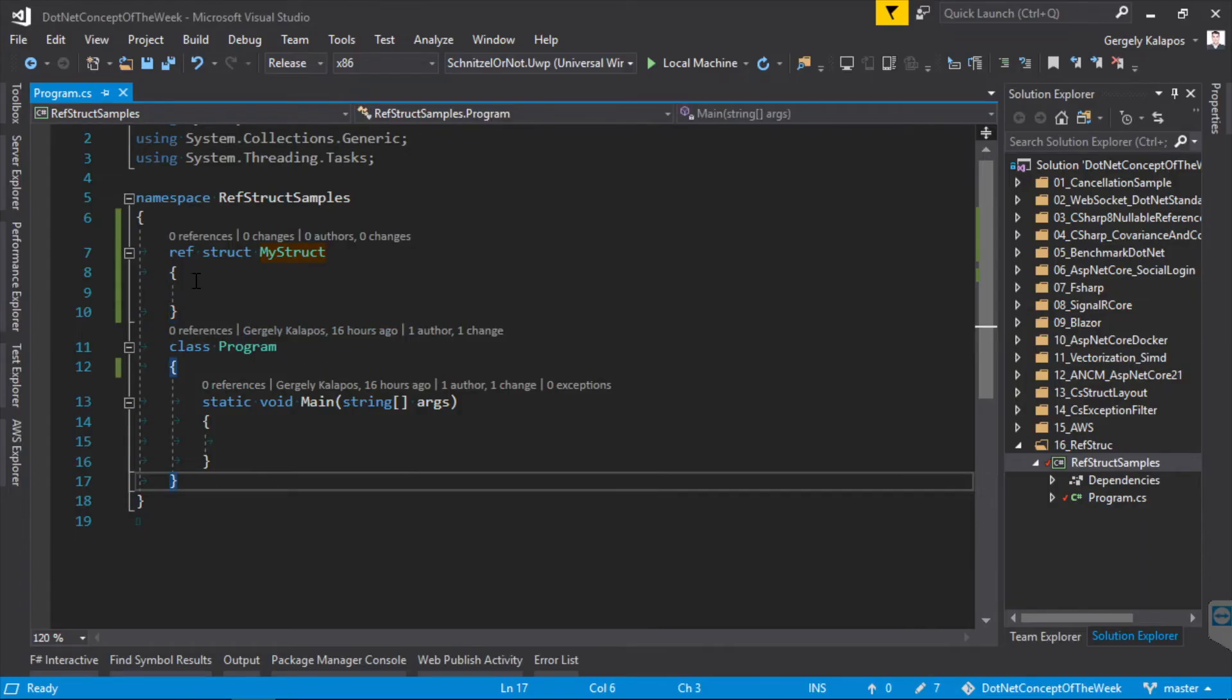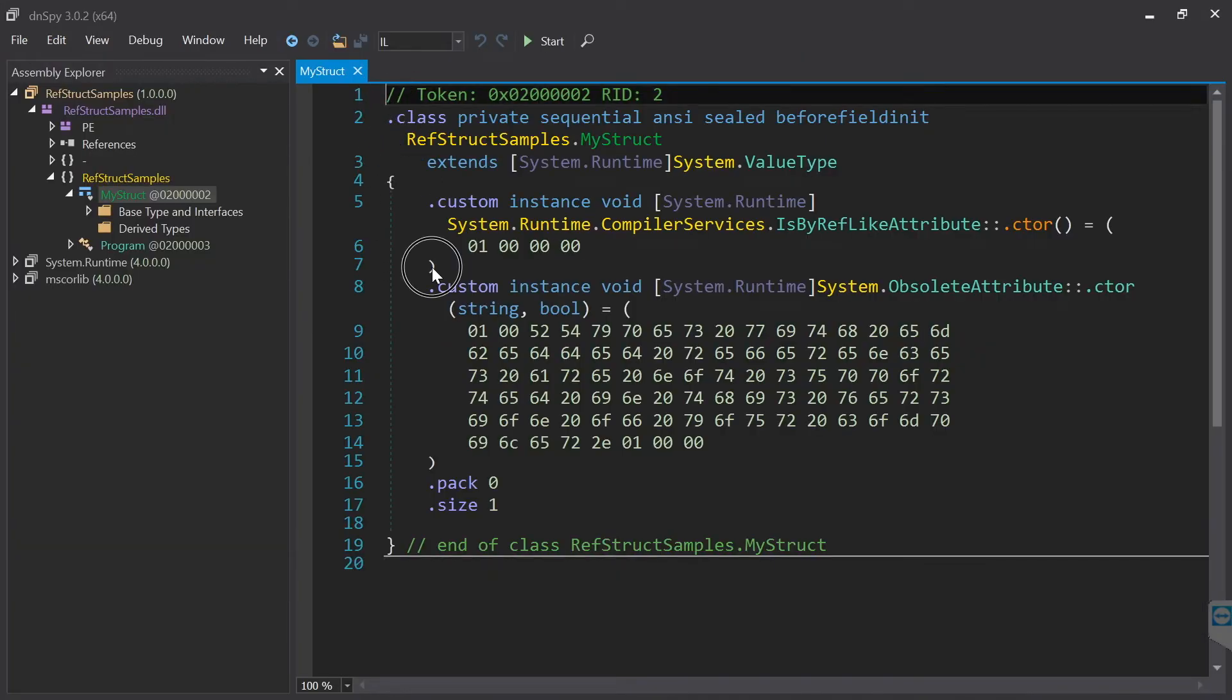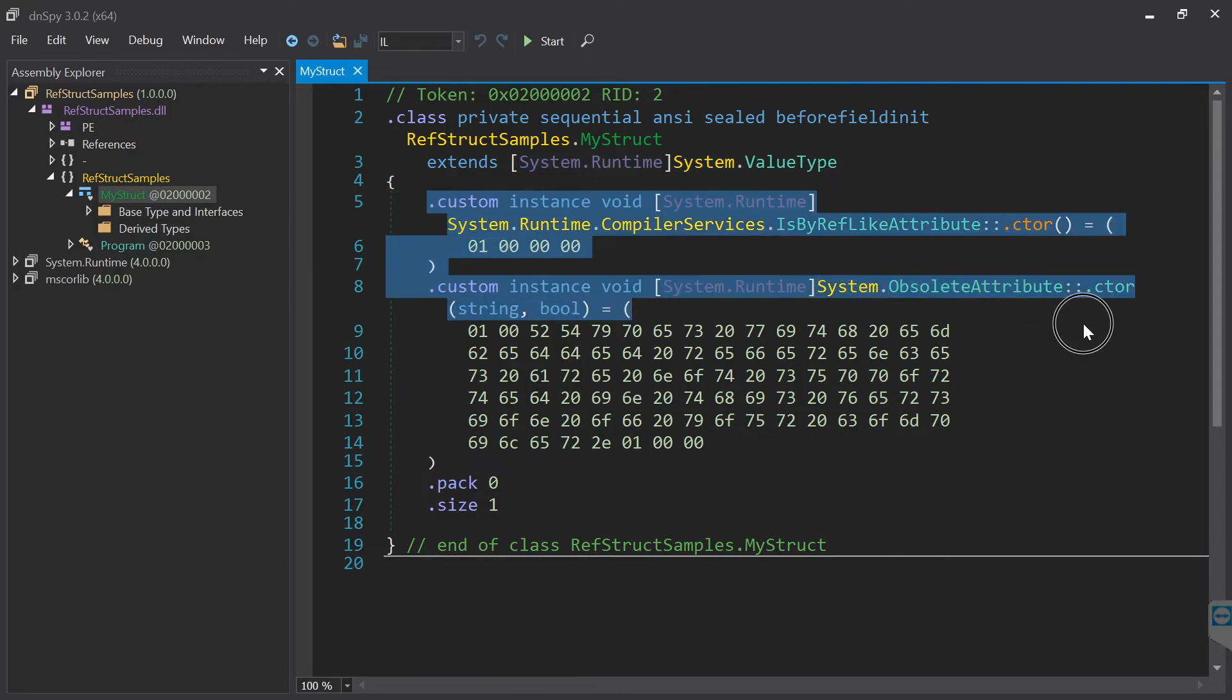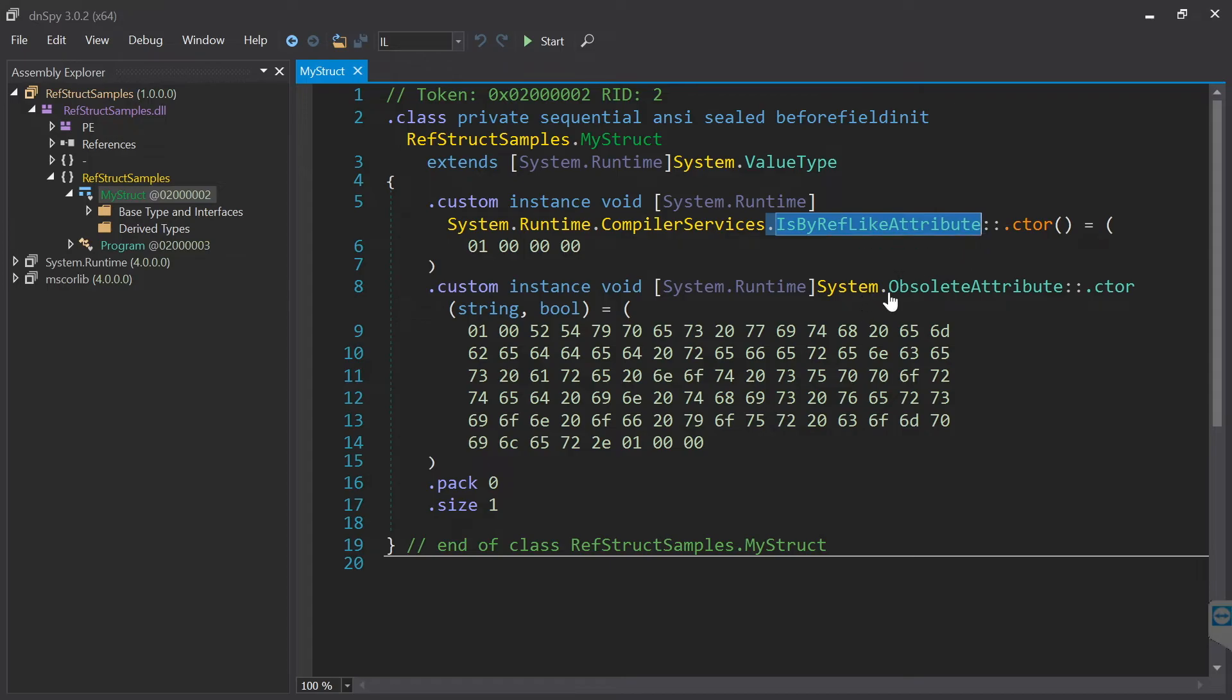Now let's take a look at the generated IL code. So I have a ref struct here and I have the corresponding IL code. The compiler basically emits two attributes to the struct.